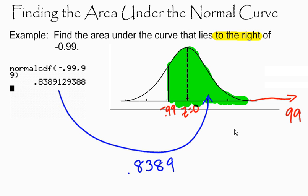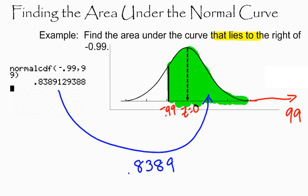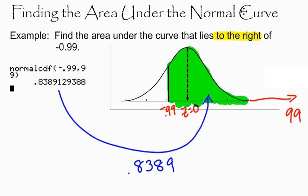So there's just another example of finding the area under the curve, but this time we're looking at the area under the curve to the right of a particular z-score.